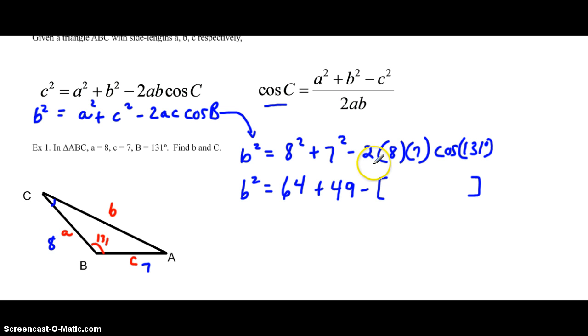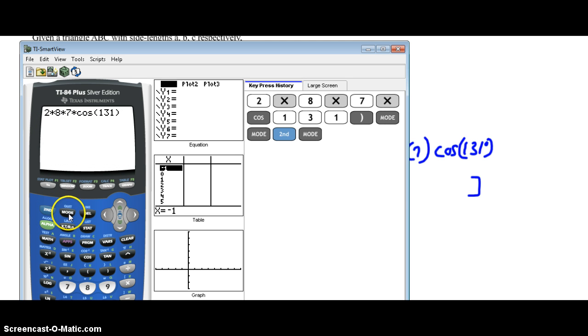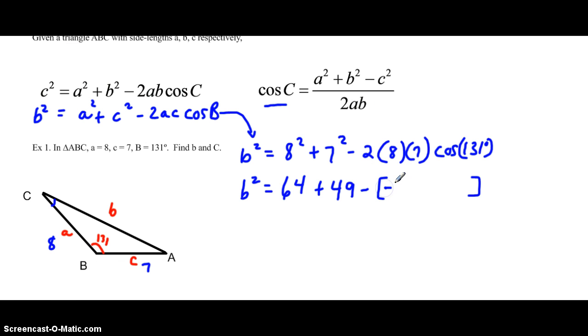In our calculator we're going to put in 2 times 8 times 7 times the cosine of 131. Remember to use your mode for degrees. You have to hit mode and if it's on radian you'd have to change to degrees. Then you'll plug in 2 times 8 times 7 times cosine of 131. You hit enter and you get minus 73.48. You want to make sure that you don't miss that sign because you have a minus minus 73.48, so that would become positive 73.48.